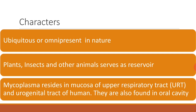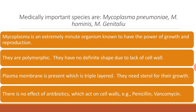Mycoplasmas are ubiquitous in nature — that means they are omnipresent, found everywhere in nature. Plants, insects, and other animals serve as reservoir hosts for these mycoplasmas. Mycoplasma resides in the mucosa of the upper respiratory tract and urinogenital tracts of human beings, and they are also found in the oral cavity. Medically important species are Mycoplasma pneumoniae, Mycoplasma hominis, and Mycoplasma genitalium.